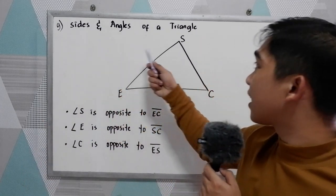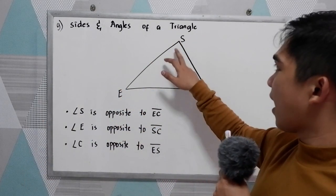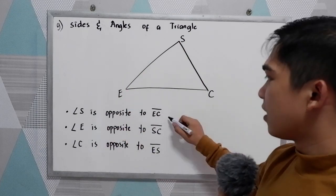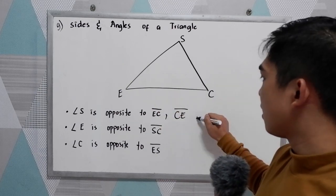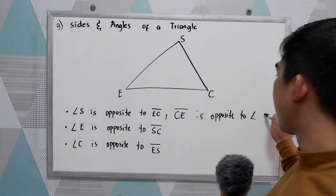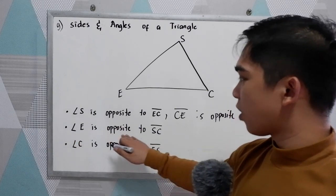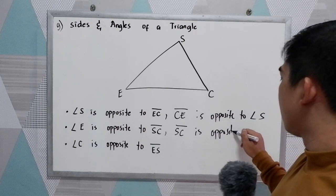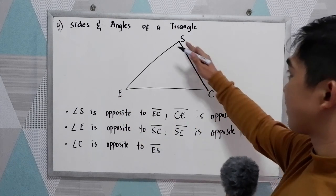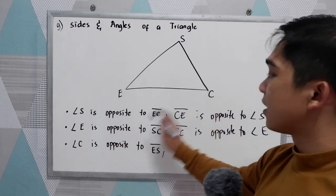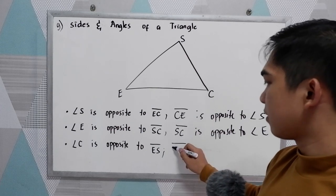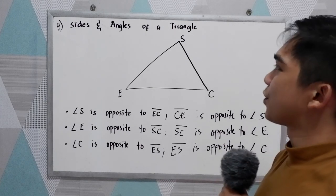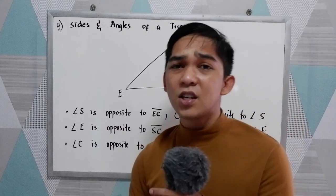Now, let us familiarize the sides and angles of a triangle. Let's say we have triangle SEC. Angle S is opposite to side EC, and side EC is opposite to angle S. Angle E is opposite to side SC, and side SC is opposite to angle E. Angle C is opposite to side ES, and side ES is opposite to angle C. Those are the definitions and theorems on triangles.